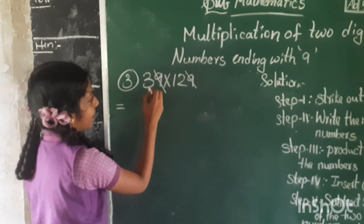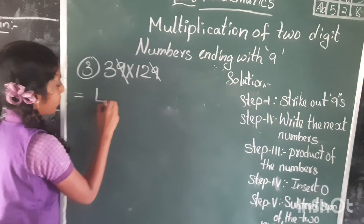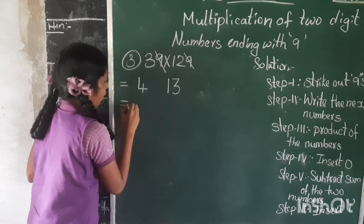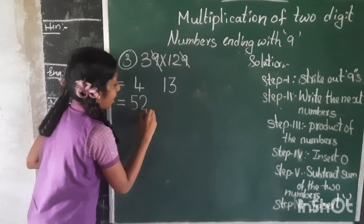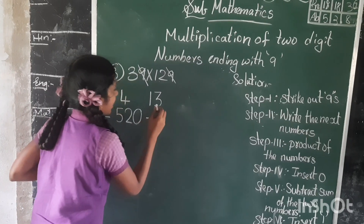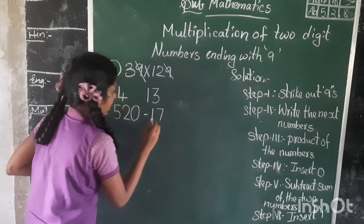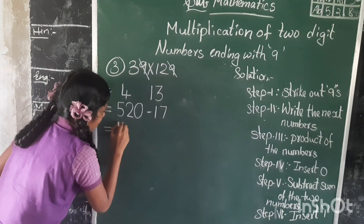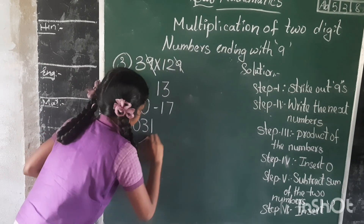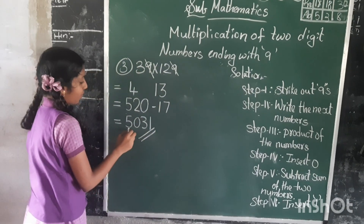Together, can you solve this problem? The first step is strike out the 9s. The second step is write the next numbers: the next number of 3 is 4, and the next number of 12 is 13. Now multiply these two numbers — 4 into 13 is 52. Insert 0 at the end. Now add these two numbers and subtract from 520: 13 plus 14 is equal to 17, and 520 minus 17 is equal to 503. Insert 1 at the end. So 39 into 129 is equal to 5031.